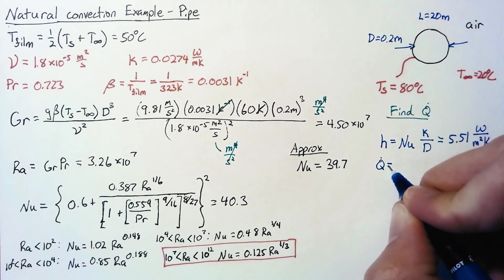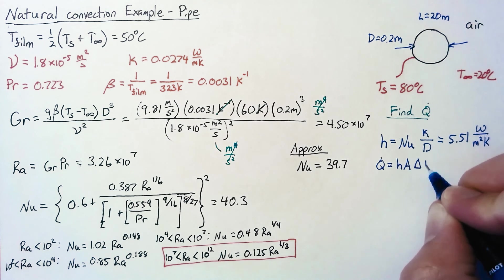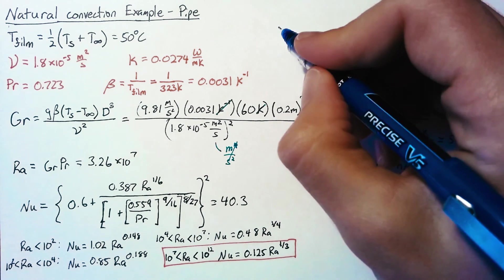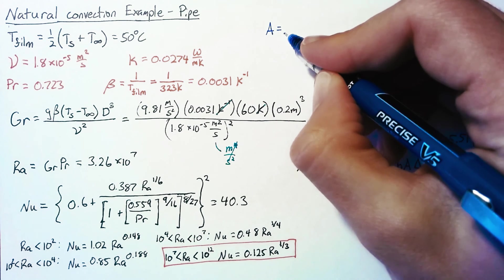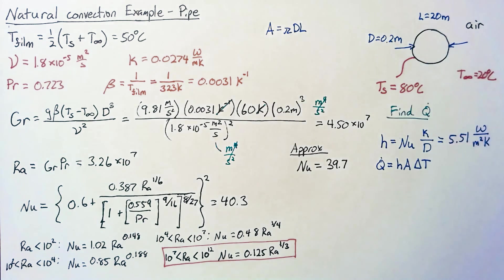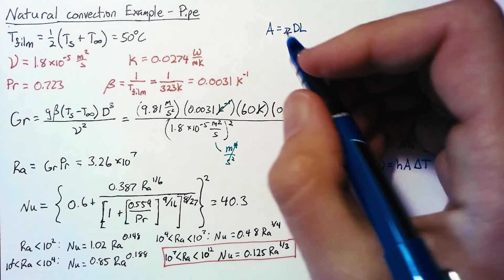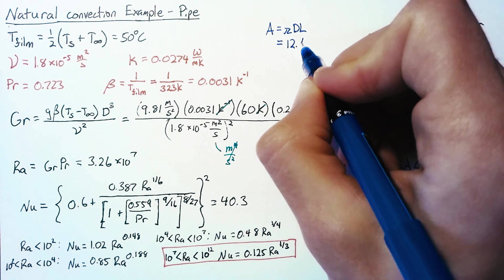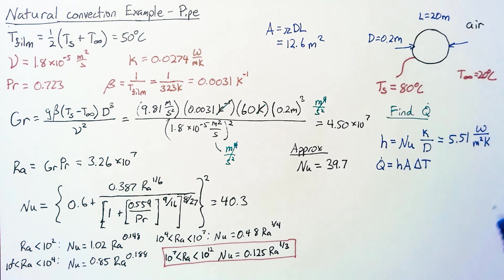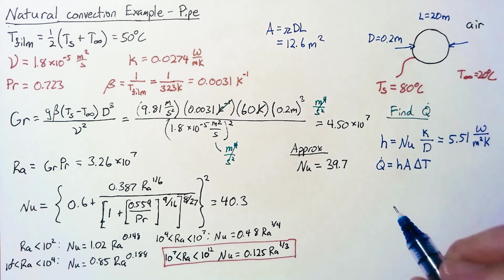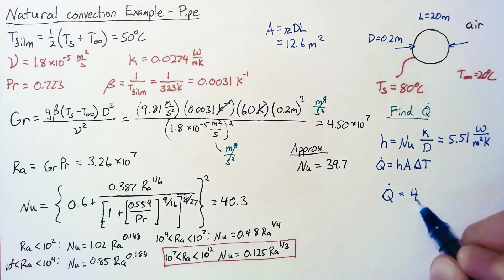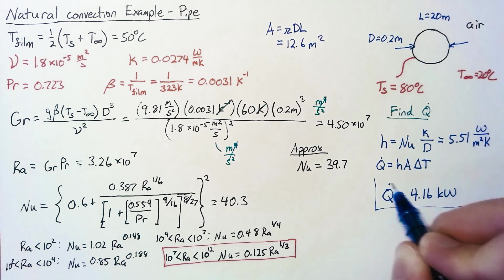Finally, we know that Q dot is equal to h times A times delta T. So we'll take a quick diversion to note that our area is simply pi times D times L, since what we're dealing with is really just a cylinder. And so our area here is 12.6 meters squared. We know that delta T is this 60 degrees. And of course, we just calculated our h. So all that together means that our Q dot for this problem is 4.16 kilowatts.